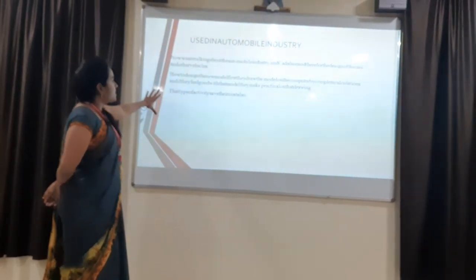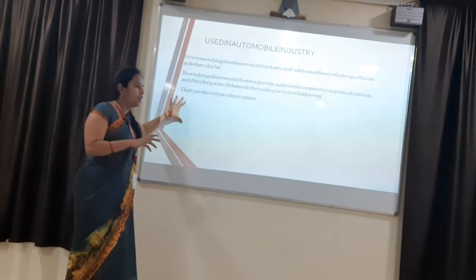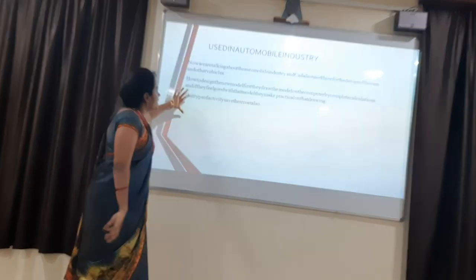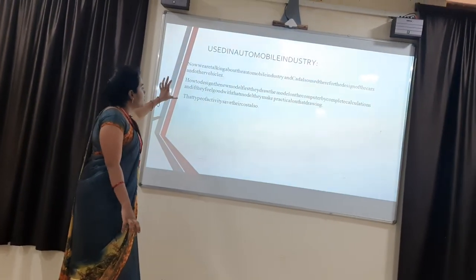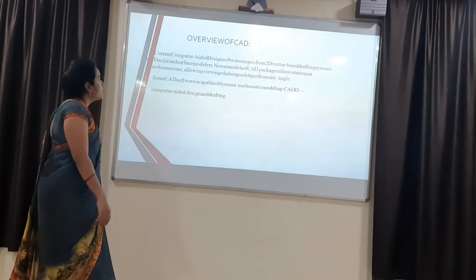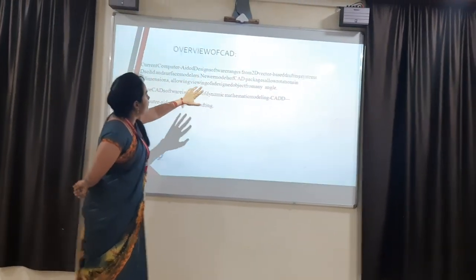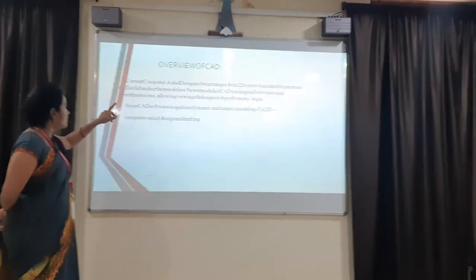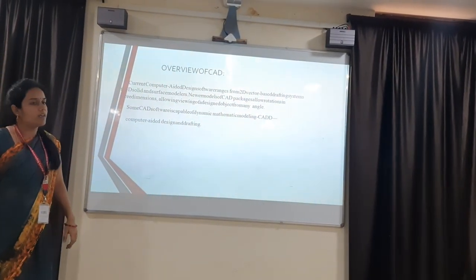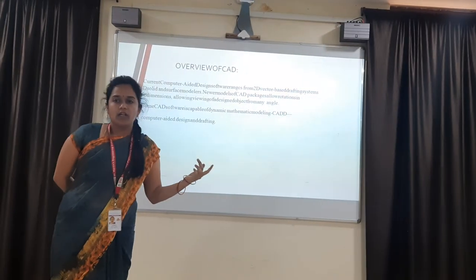In the automobile industry, the outer layer of the car, the design of wheels, gear systems — everything is done with the help of CAD drawings easily and economically. In current CAD design software, there are two types: 2D vector-based drafting and 3D solid and surface. I will be continuing with the next topic in the next video. Thank you.